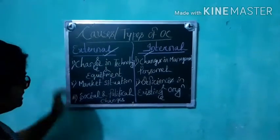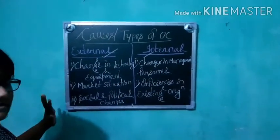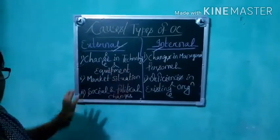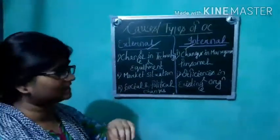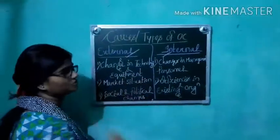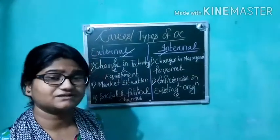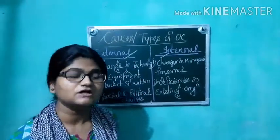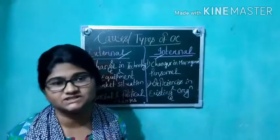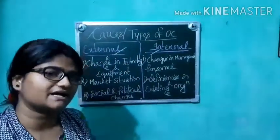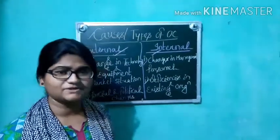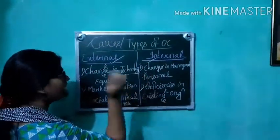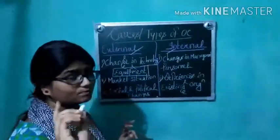Let's start with external factors. There are three points. The first is change in technology and equipment, which I also mentioned when discussing the nature of organizational change. The simple point is: when technology changes, you have to adopt those technologies. If you keep doing things traditionally, you cannot maintain production. You also have to adopt new equipment for the production process.